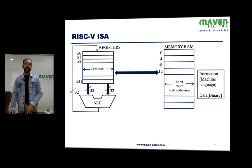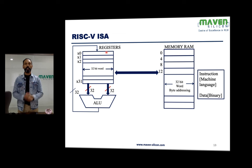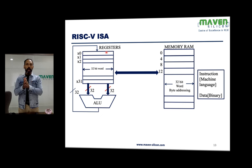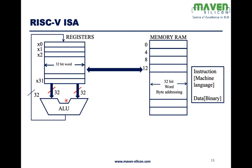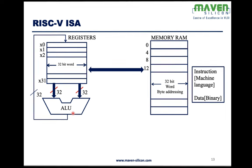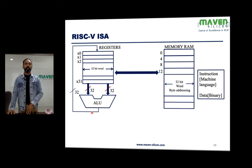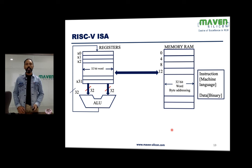The register file contains 32 registers, each 32 bits wide — 32 is a key number for RISC-V. The ALU performs all kinds of operations; results are written either back to registers or to memory. To support this data flow between registers, ALU, and memory, different kinds of instructions are needed.